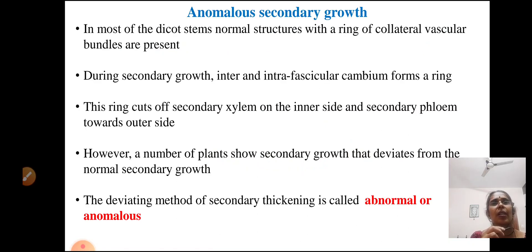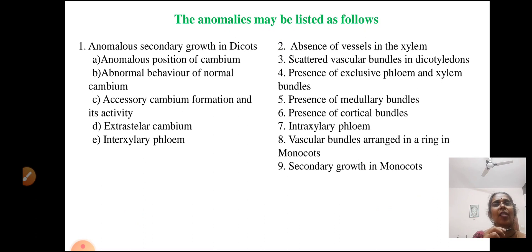So what is anomalous secondary growth? In most of the dicot stems, normal structures with a ring of collateral vascular bundles are present. But during secondary growth, inter- and intrafascicular cambium forms a ring and cuts off secondary xylem on the inner side and secondary phloem towards the outer side. But in a number of plants, secondary growth is deviated from this normal type. This deviation of secondary thickening is called abnormal or anomalous secondary growth.